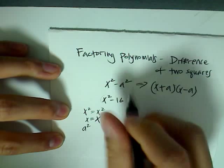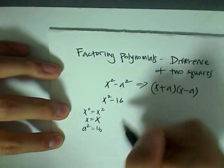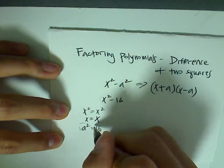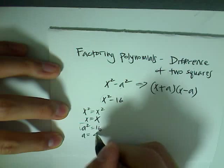Now we have a squared equals to 16. Because a squared equals to 16, so when you take the square root of a squared and the square root of 16, you have a equals 4.